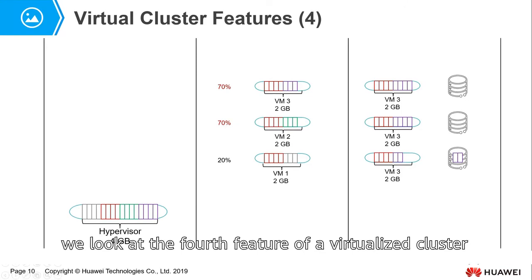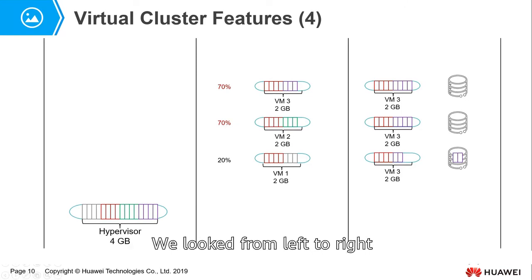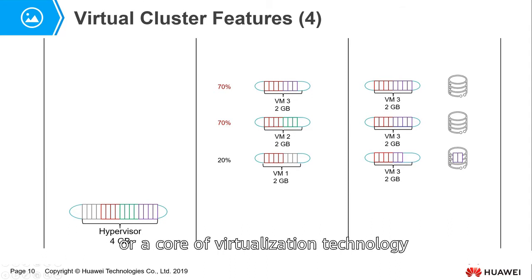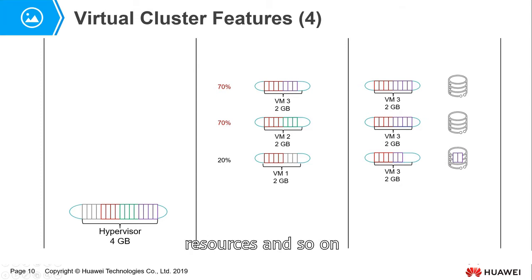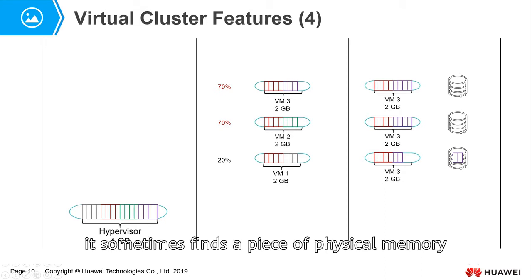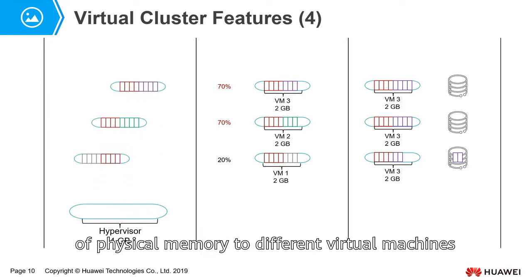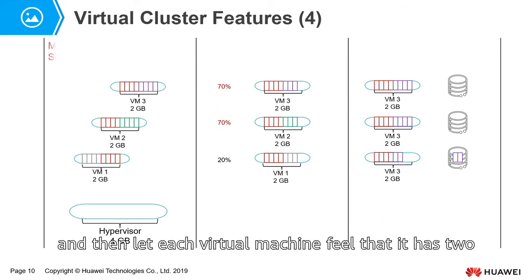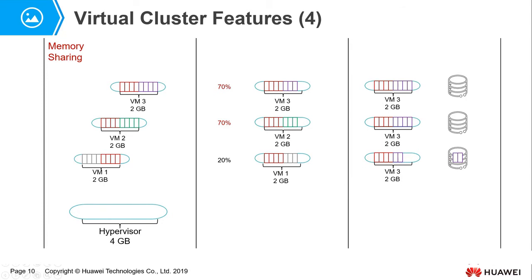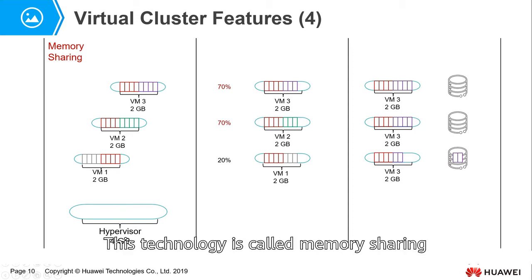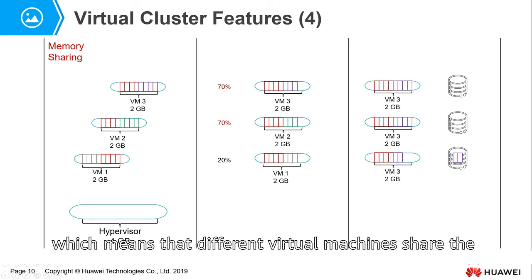Next, let's look at the fourth feature of a virtualized cluster. Looking from left to right, the leftmost column is the hypervisor, which is the core of virtualization technology. Its main role is to allocate CPU resources, allocate memory resources, and so on. When the hypervisor allocates memory resources, it sometimes finds a piece of physical memory that many virtual machines will access. Through mapping, the hypervisor maps this piece of physical memory to different virtual machines, letting each virtual machine feel that it has 2 GB of memory, even though the real physical memory is only 4 GB. This technology is called memory sharing — different virtual machines share the same piece of physical memory.